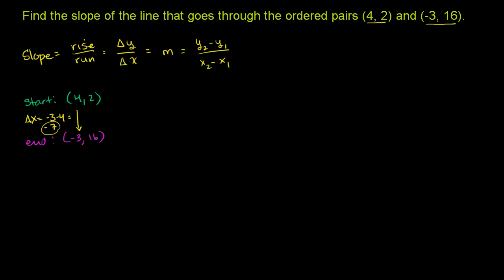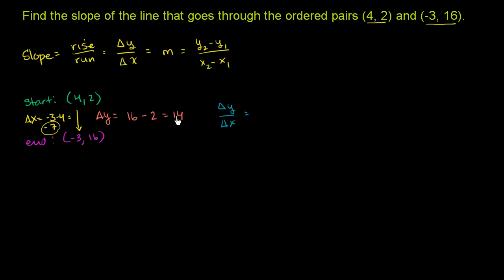Let's do the same thing for the change in y. Our change in x was our endpoint x value minus our starting x value. Similarly, for change in y: if we're starting at 2 and we go to 16, that means we moved up 14. You take your ending y value and subtract your starting y value: 16 minus 2 equals 14. So the slope is change in y over change in x, which is 14 over negative 7, and 14 divided by negative 7 is negative 2.